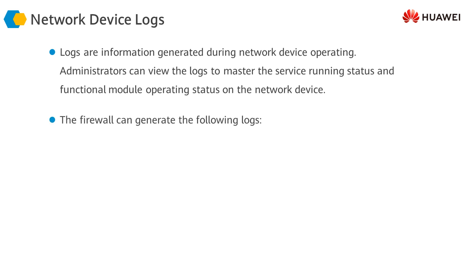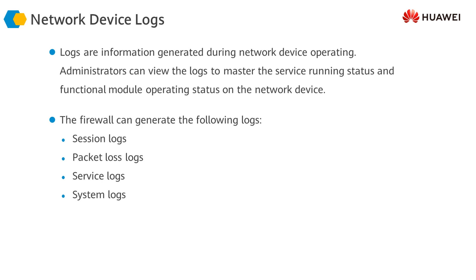Huawei firewall can generate different types of logs. For example, we can have session logs, packet loss logs, service logs, and system logs. Session logs are generated whenever the firewall sets up a session. Administrators can enable the firewall to generate session logs at session creation, session termination, or at periodic intervals.